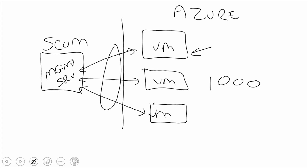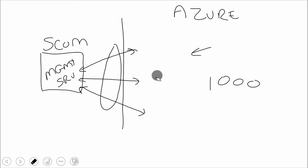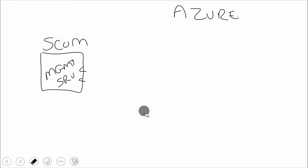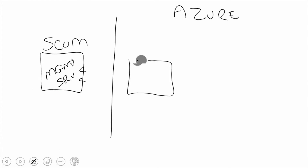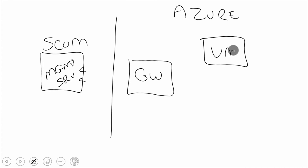Sounds like we need a gateway of some sort there — and that's exactly right. What we would do is set up a gateway server, which is exactly what it's called. We would have our VMs reporting to this gateway, and then channel that data through one pipe coming through. It's typically our site-to-site VPN tunnel for our hybrid connectivity in order to bring that data back on-premises.